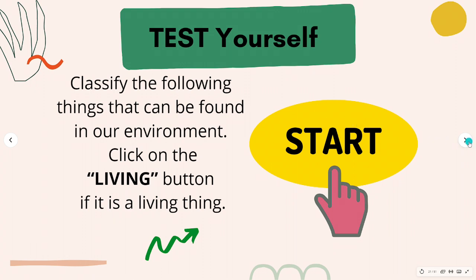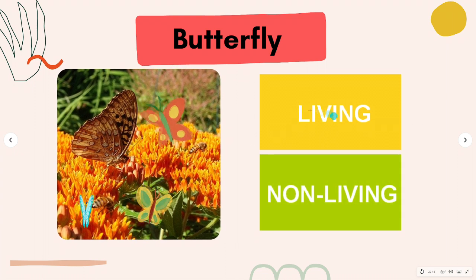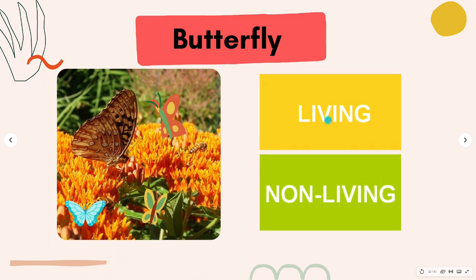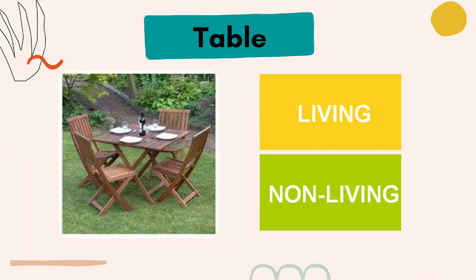Are you ready? Butterfly — is it living or non-living? You are correct. It is a living thing. Why? Because it needs food, water, and air to stay alive. It has the ability to reproduce or give birth, grow and change on their own, and respond to changes in the environment. How about this table — living or non-living? Very good. It is a non-living thing. Remember the characteristics of living things. This table is a non-living thing because it does not need food, does not need water or air to stay alive. It does not have the ability to reproduce or give birth, grow and change on their own, and respond to changes in the environment.